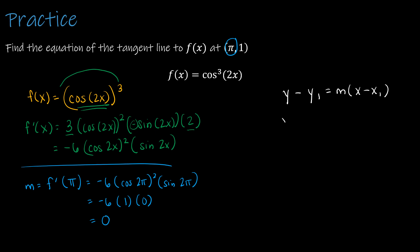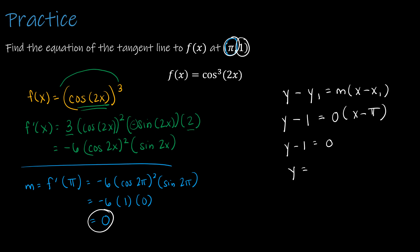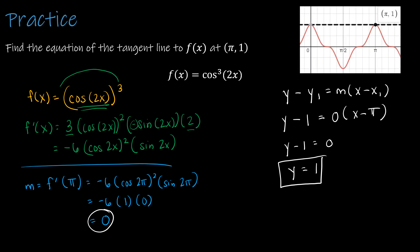Using point-slope form — y minus y1 equals m times (x minus x1) — with y1 equal to 1, slope equal to 0, and x1 equal to pi: everything on the right-hand side is 0, so the equation simplifies to y equals 1. That is the equation of the tangent line at the point (pi, 1). Looking at the actual graph, we can see the point (pi, 1) with the dotted tangent line y equals 1.